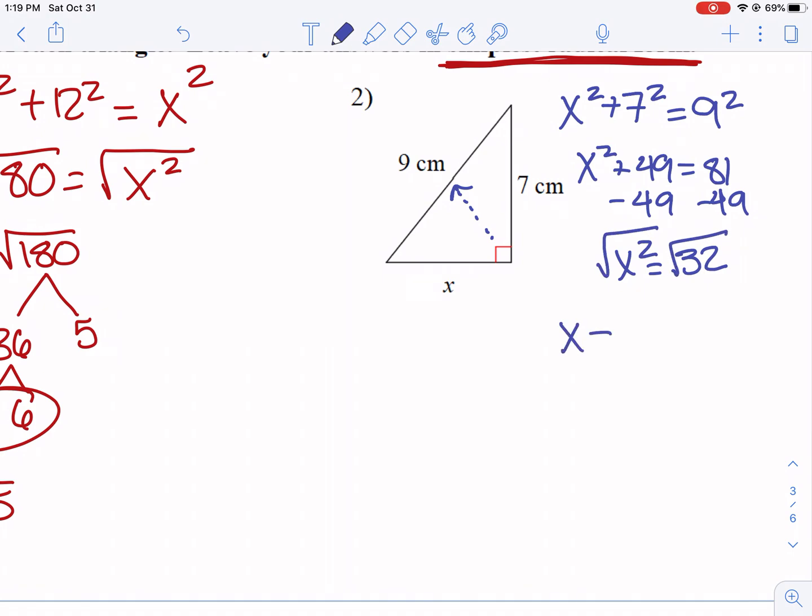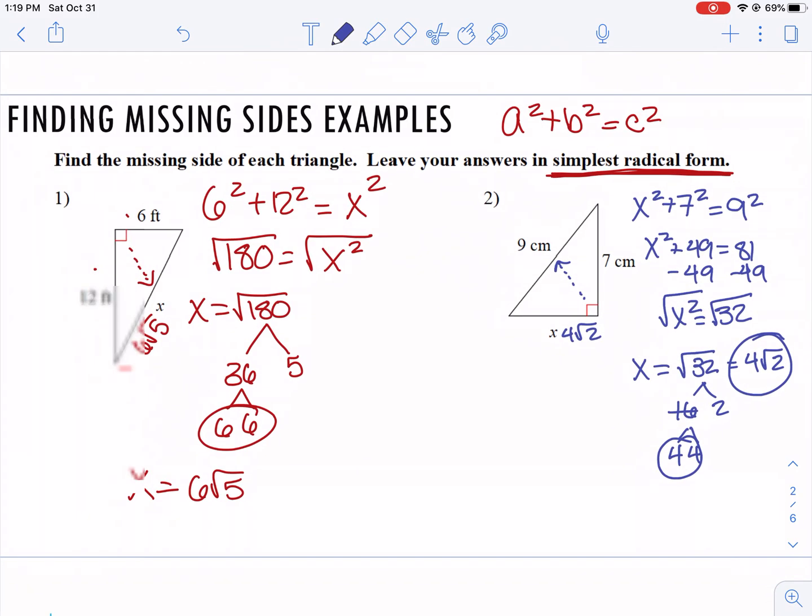Now we square root it, so x equals the square root of 32. And then when I break down 32, that's 16 and 2. So I can take out these pairs of 4s and leave the 2 on the inside. So 4 square root 2 is this missing length. So that's how we use the Pythagorean theorem in general.